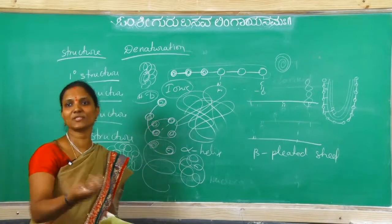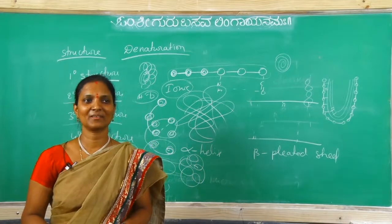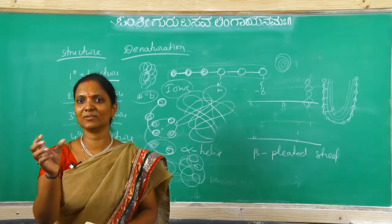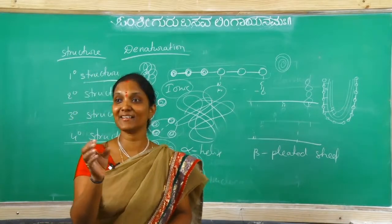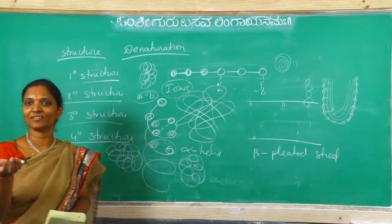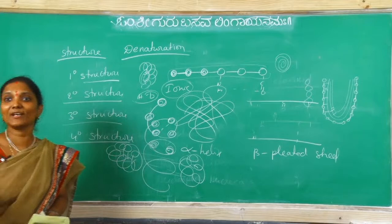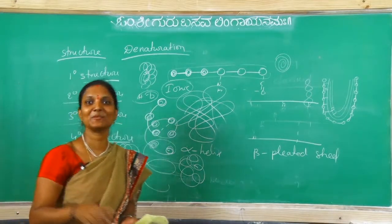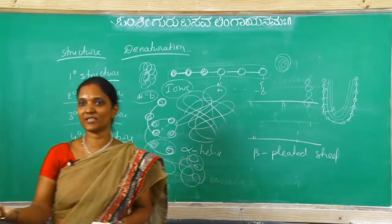After boiling, the egg loses its activity. An actual egg can change to a small chick, but a boiled egg cannot - it loses its activity. So after boiling, what happened? It loses its activity.